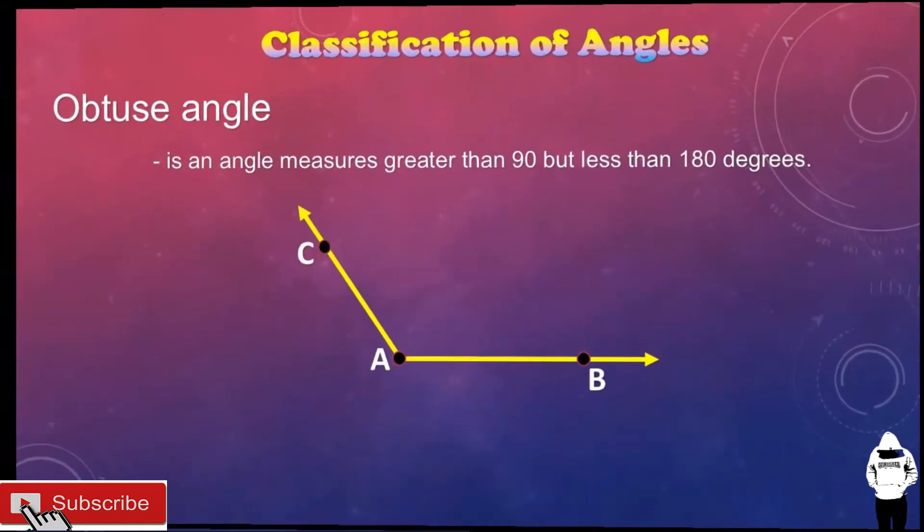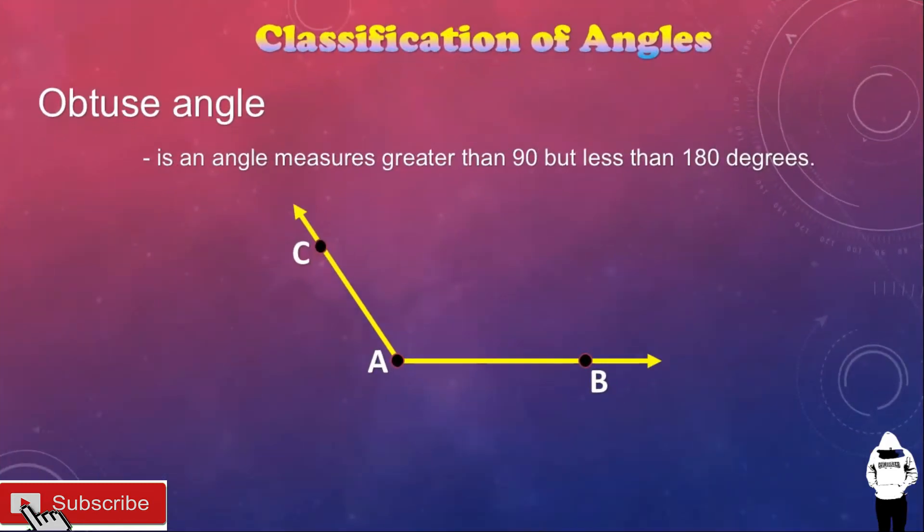Next, obtuse angle is an angle measures greater than 90 degrees but less than 180 degrees. So, angle CAB measures 120 degrees for example. So, this angle measures 120 degrees and this angle is an obtuse angle.